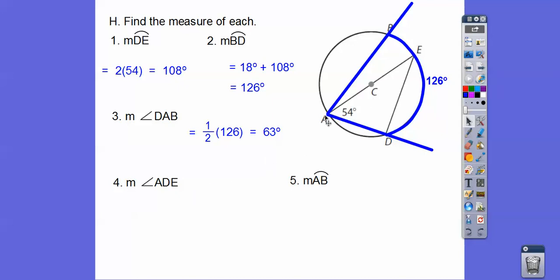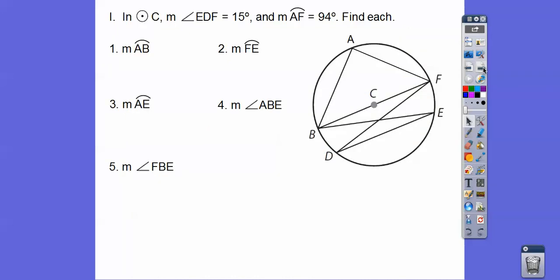ADE. Where's ADE? A, D, E. Notice how it intercepts that semicircle. So it's half of the 180, so it's 90. Measure of arc AB. I think I'm just going to take off this 18 from this 180. That diameter gives us 180, so it's 180 minus 18.